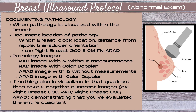When pathology is visualized within the breast, you want to document the location of the pathology. You would document that by which breast, the clock location, the distance from the nipple, and the transducer orientation. For example: right breast, two o'clock, five centimeters from nipple, antiradial.